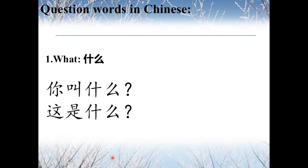The first one: 什么, meaning 'What?' For example, 你叫什么名字? — What's your name? And 这是什么? — What is this?